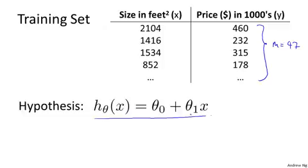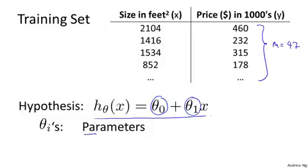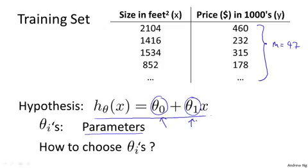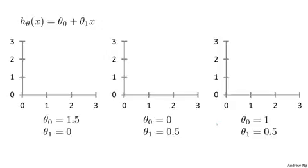To introduce a little bit more terminology, these Theta 0 and Theta 1, these Theta i's are what I call the parameters of the model. And what we're going to do in this video is talk about how to go about choosing these two parameter values, Theta 0 and Theta 1. With different choices of the parameters Theta 0 and Theta 1, we get different hypotheses, different hypothesis functions.